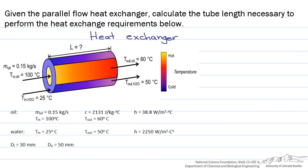Consider this parallel flow concentric heat exchanger, where hot oil comes in and is cooled by water that jackets it. Given the information below, we want to find how long the tube has to be in order to perform the necessary cooling.